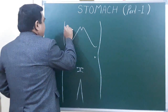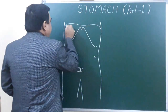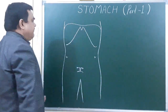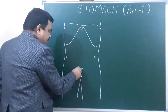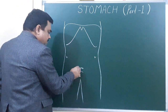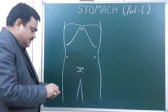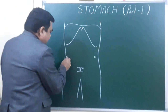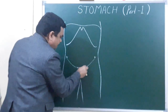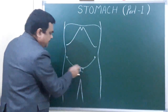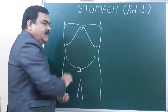Here is the position of the diaphragm. This is the diaphragm, this is the costal margin, this is the pubic bone, this is the pubic tubercle, this is the anterior superior iliac spine, and here is the inguinal ligament. So this is the abdominal cavity.